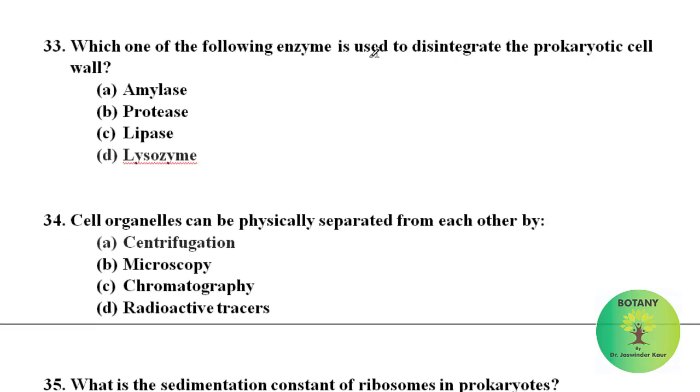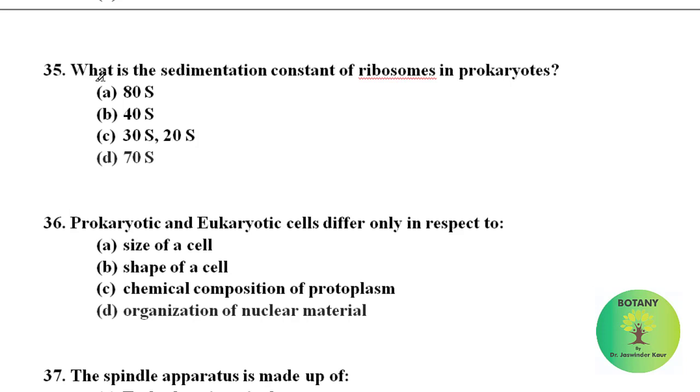Which one of the following enzyme is used to disintegrate the prokaryotic cell wall? Lysozymes are used. Cell organelles can be physically separated from each other by the method of centrifugation. Centrifugation is a technique which involves the application of centrifugal force to separate the particles from a solution according to their size, shape, density, viscosity of the medium and rotor speed. What is the sedimentation constant of ribosomes in prokaryotes? In prokaryotes, sedimentation constant of ribosome is 70S.